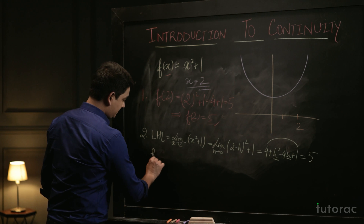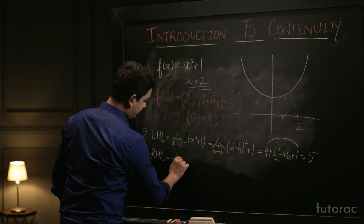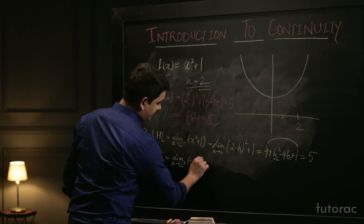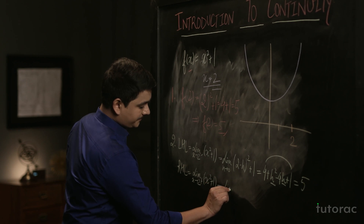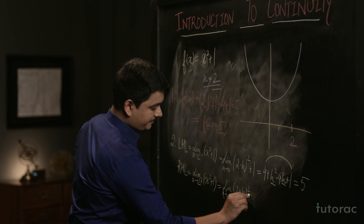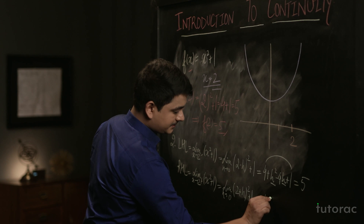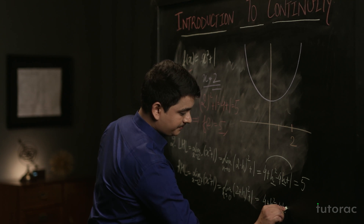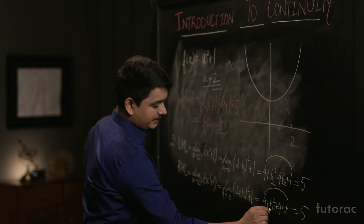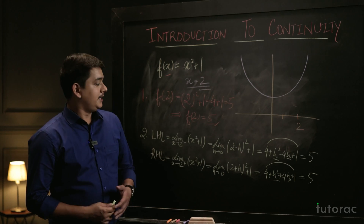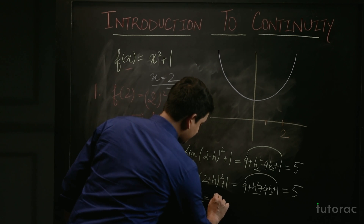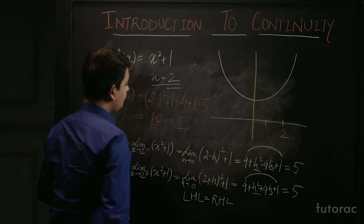For the Right Hand Limit (RHL): limit as x tends to 2⁺ of x² + 1 equals limit as h tends to 0 of (2 + h)² + 1, which gives 4 + h² + 4h + 1. Putting h = 0, we again get 5. Since LHL = RHL, we conclude that the limit of the function exists at x = 2.